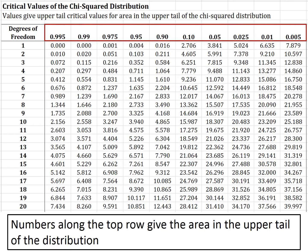However, this table is very counterintuitive. Since the table gives areas in the upper tail of the distribution — above the value that you look up — the first percentile corresponds to the column labeled 0.99, because there's 99% of the area above the first percentile. On the other hand, the 99th percentile corresponds to the column labeled 0.01, because there's only 1% of the area above the 99th percentile. This is because the numbers in the top row give the area in the upper tail.